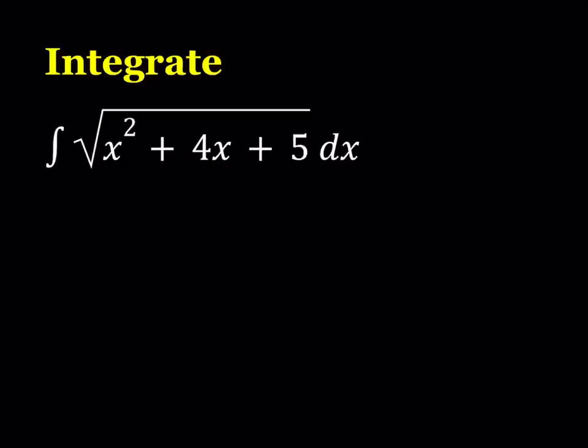Hello everyone. In this video we're going to be integrating a radical function — the square root of x squared plus 4x plus 5 dx. Some functions are easy to integrate, such as cosine x or e to the power x, because we know whose derivative gives us that function. But in cases like this one, it's not easy to guess the anti-derivative, so we have to use special methods. One such method is trigonometric substitution.